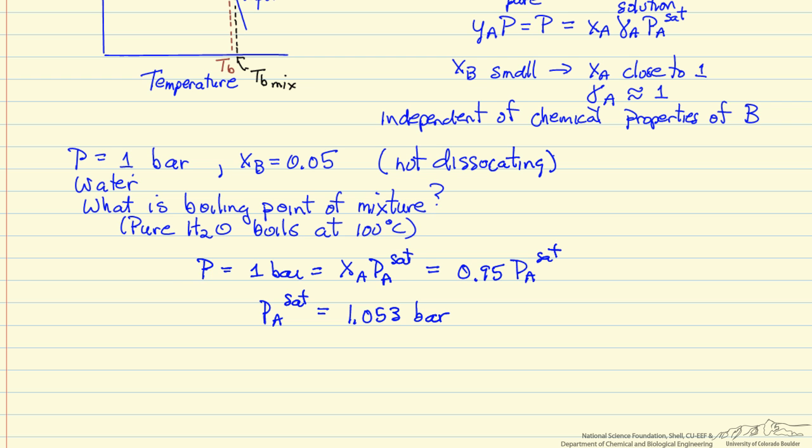Then we can use steam tables to find at what temperature we have this saturation pressure. I use online steam tables that have accurate fine gradations in values to make it easy without interpolation. The boiling point is 101.1 degrees Celsius.